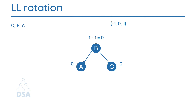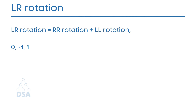Next we will see LR rotation. Double rotations are a bit tougher than single rotations. LR rotation equals RR rotation plus LL rotation — that is, first an RR rotation is performed on the subtree, then an LL rotation is performed on the full tree. By full tree we mean the first node from the path of the inserted node whose balance factor is other than minus 1, 0, or 1.